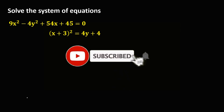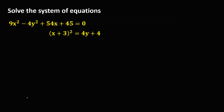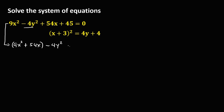Let's solve this system of equations. First, we need to rewrite the given equation by grouping all x terms and all y terms. This becomes 9x squared plus 54x and since we only have one y term, bring down negative 4y squared, then equals — transpose the positive 45 — so that becomes negative 45.